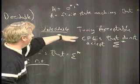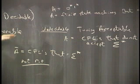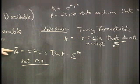So there's an example of a set which is undecidable and its complement which is not even partially decidable, which is not recursively enumerable.